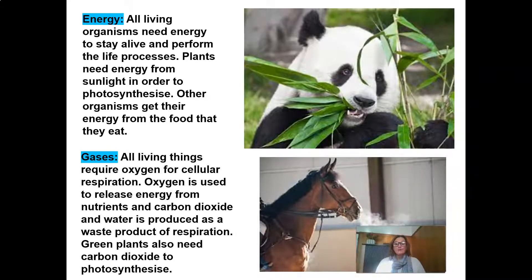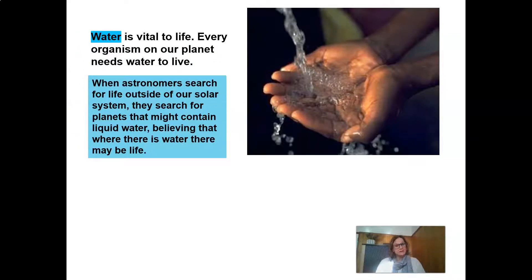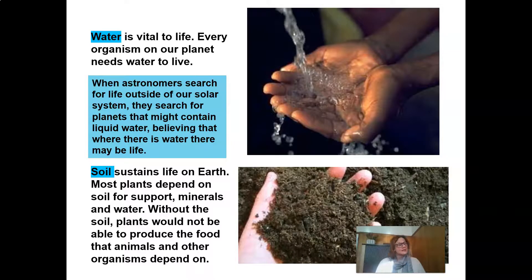All living things require oxygen for cellular respiration. Oxygen is used to release energy from nutrients, and carbon dioxide and water are produced as waste products of respiration. Green plants also need carbon dioxide to photosynthesize. Water is vital to life — every organism on our planet needs water to live. When astronomers search for life outside of our solar system, they search for planets that might contain liquid water, believing that where there is water, there may be life. Soil sustains life on Earth. Most plants depend on soil for support to anchor the plant, for minerals, and for water. Without soil, plants would not be able to produce the food that animals and other living organisms depend on.